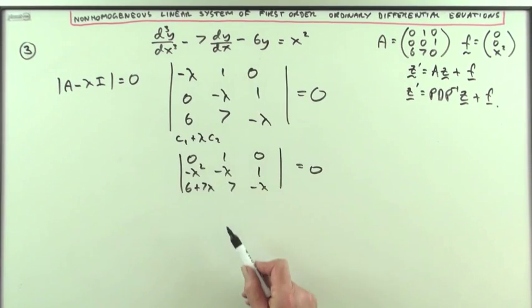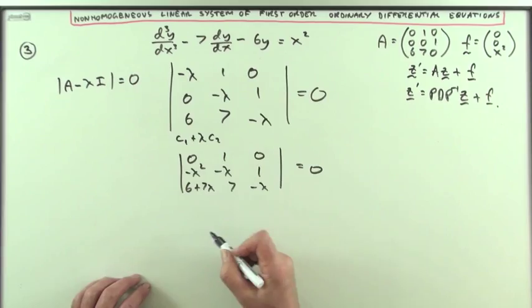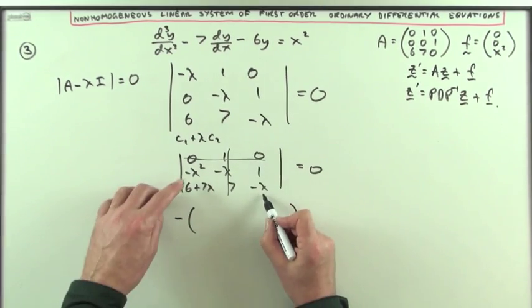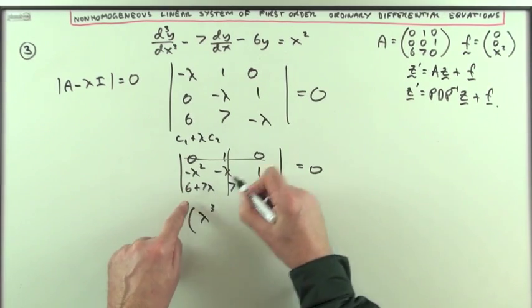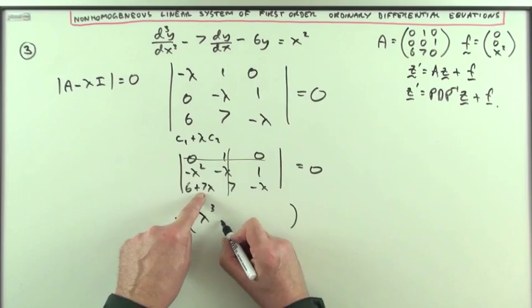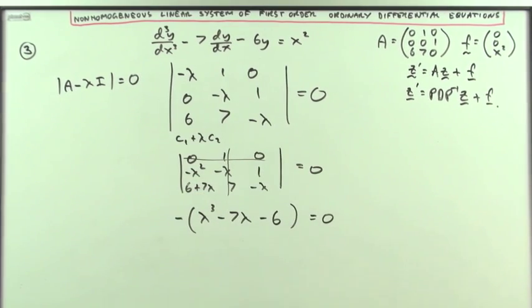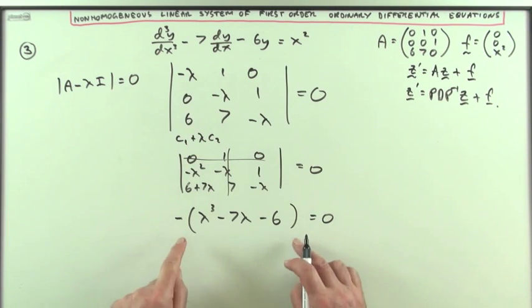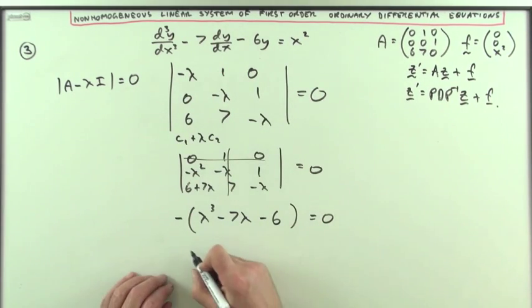0 plus a negative lambda times lambda is a negative lambda squared, leaving the rest alone, and a 6 plus 7 lambda, and then a 7 and a negative lambda. Just so that I've now got just 1 times its minor. Of course, 1's in a negative position so it'll just be negative of, then missing out those, that'll be lambda cubed minus, and 1 times that, that'll just be minus 7 lambda minus 6 equals 0.